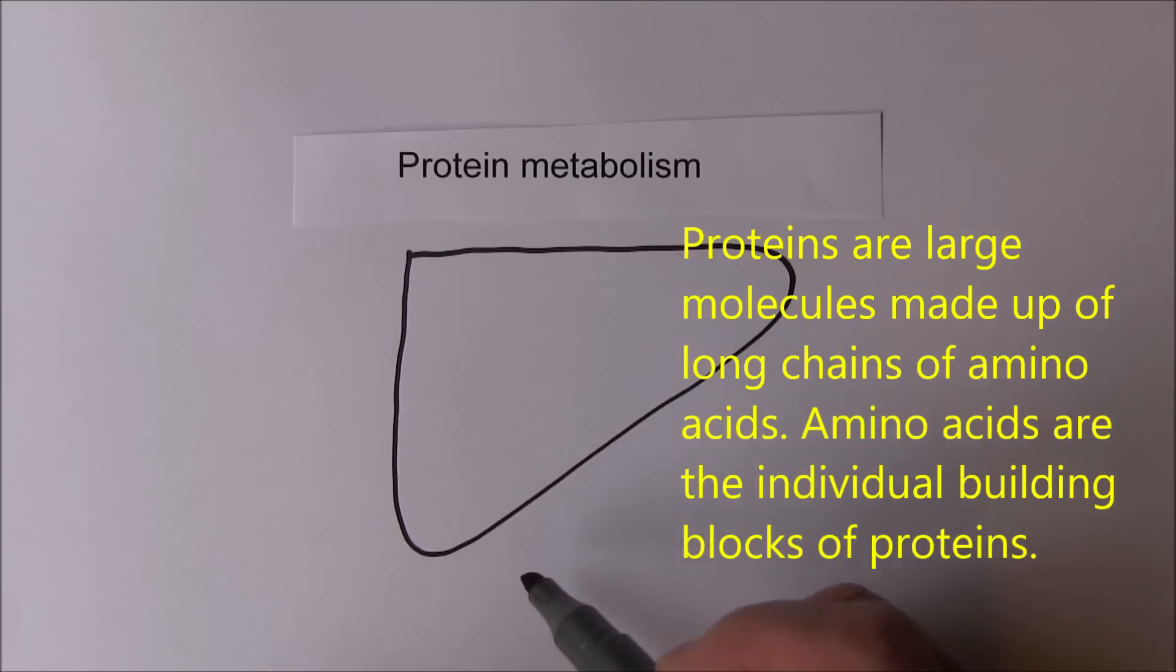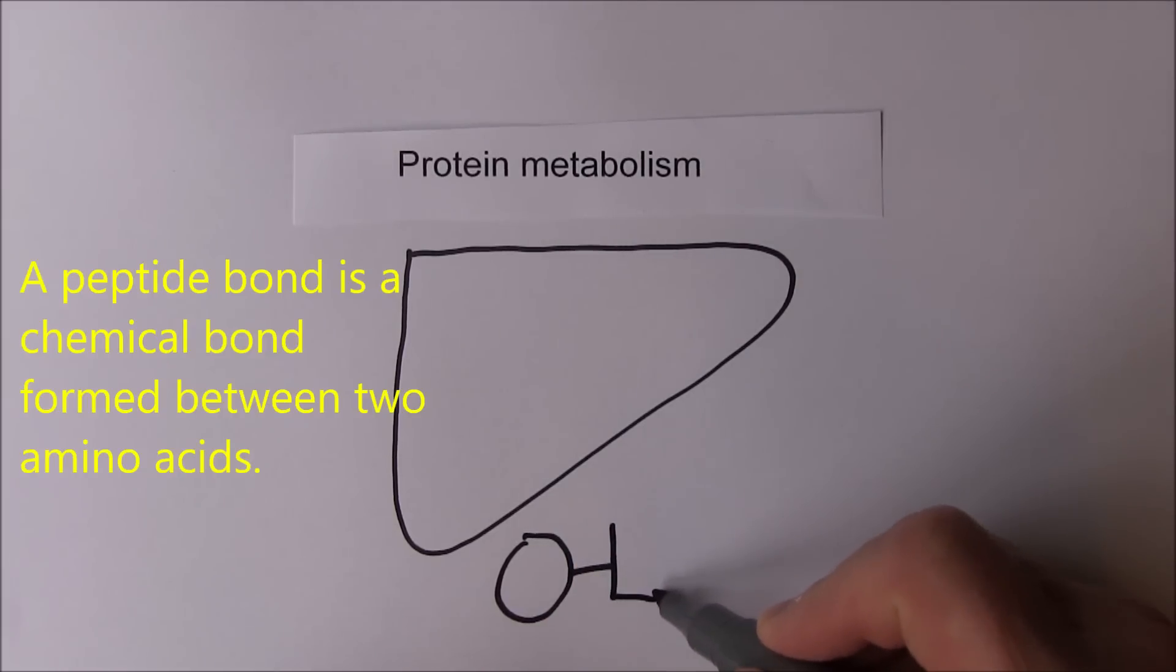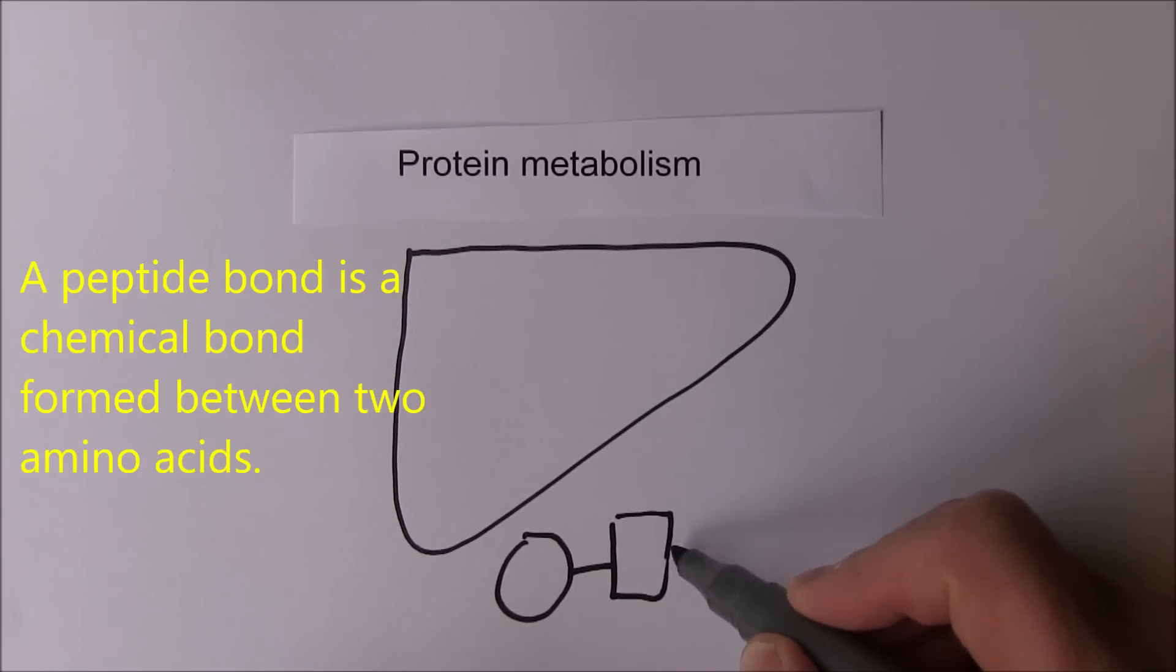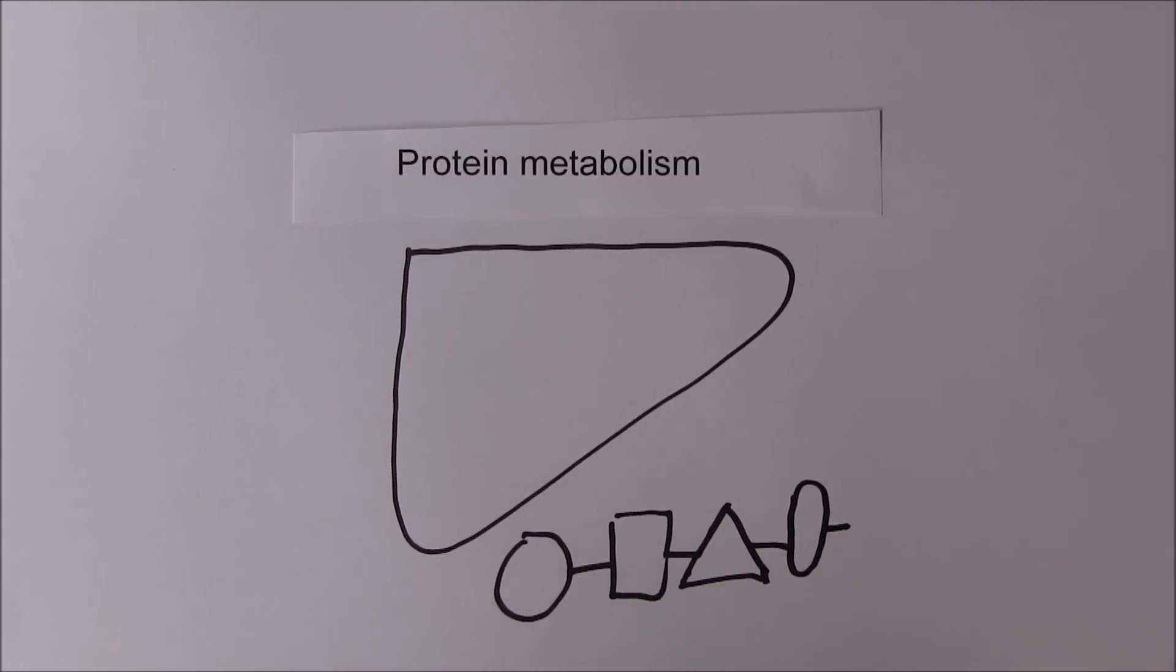Amino acids are the subunits of proteins. There's one amino acid unit, and then there's something called a peptide bond which connects it to another amino acid unit, and then another amino acid. These string together to form long peptide chains which form proteins.